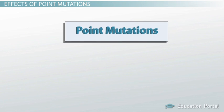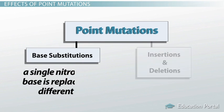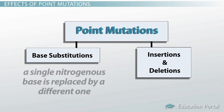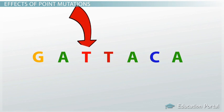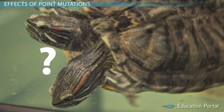We've talked before about the different kinds of point mutations. Some are base substitutions in which a single nitrogenous base is replaced by a different one. Other point mutations are insertions and deletions. We know all about the changes that occur in point mutations, but so what? They're just tiny alterations to a DNA strand. How can that have a significant effect on a living creature?